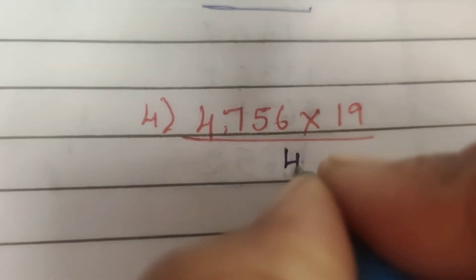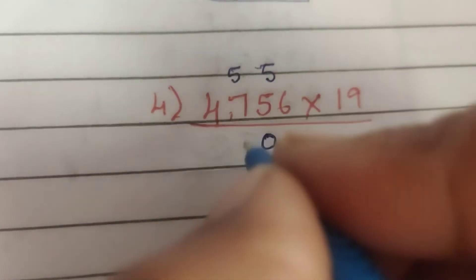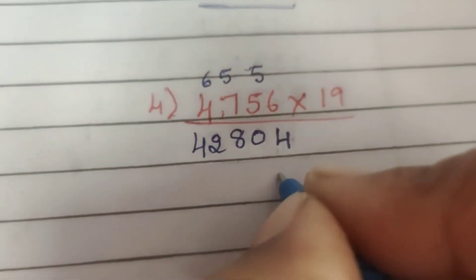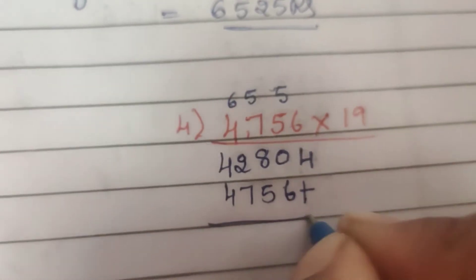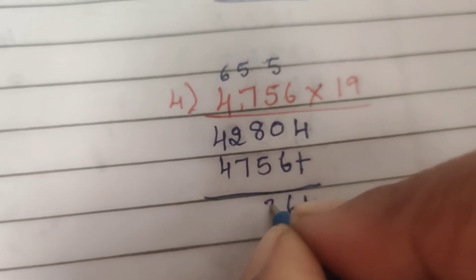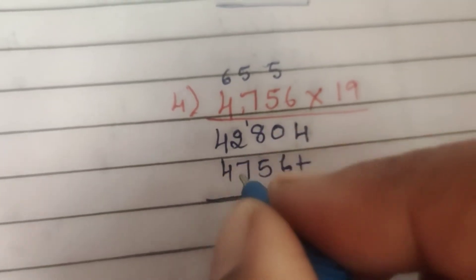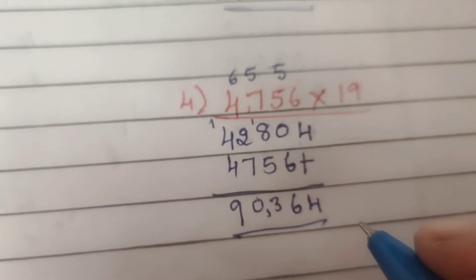Fourth problem: 4,756 into 19. Multiply by 9: 9 sixes are 54, carry 5. 9 fives are 45, 45 plus 5 is 50, carry 5. 9 sevens are 63, 63 plus 5 is 68, carry 6. 9 fours are 36, 36 plus 6 is 42. Then multiply by 1: 1 six is 6, 1 five is 5, 1 seven is 7, 1 four is 4. Adding: 0 plus 6 is 6, 8 plus 5 is 13, carry 1. 1 plus 2 is 3, 3 plus 7 is 10, carry 1. 1 plus 4 is 5, 5 plus 4 is 9. Answer: 90,364.